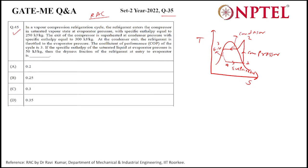The refrigerant enters the compressor in the saturated vapor state, at point 1, and its enthalpy is 250 kilojoule per kg. At the exit of the compressor, enthalpy is 300 kilojoule per kg.